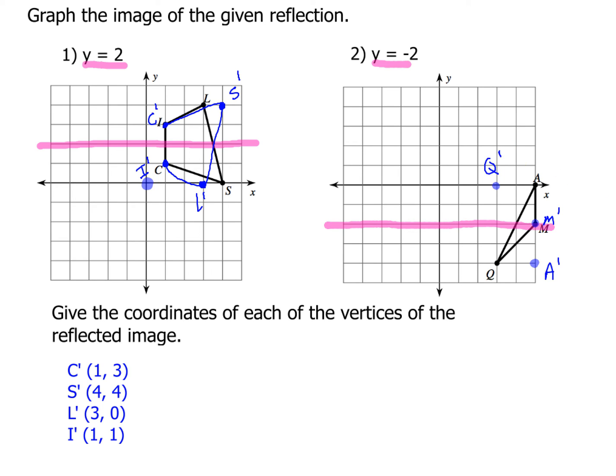So now same thing again, we'll go ahead and write down the coordinates for each one of those points, and we'll connect the dots to make the figure the way it was before. So hopefully for this, you came up with q prime at the location (3, 0), and m prime is at (5, -2), and a prime is at (5, -4).